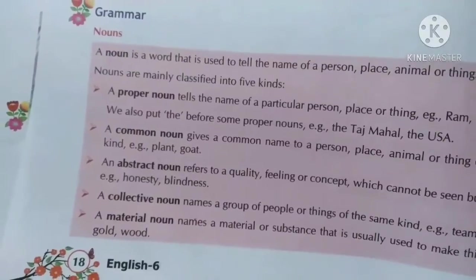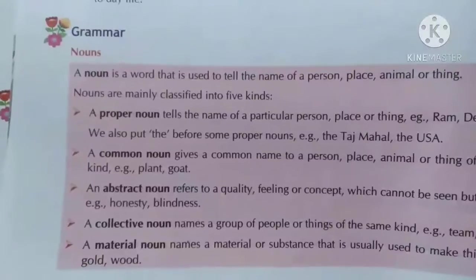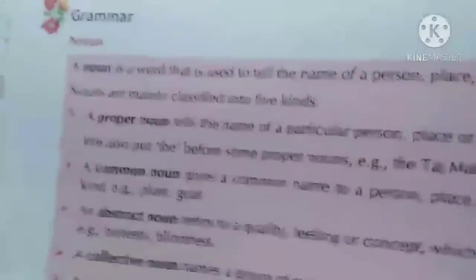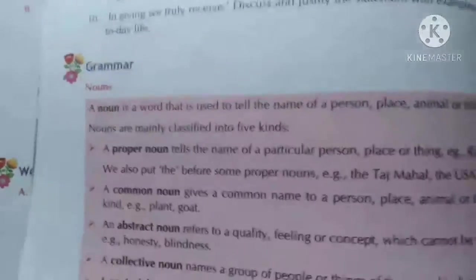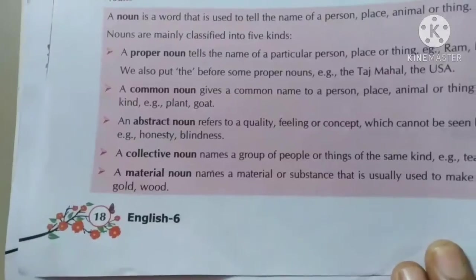After that we will come to the next chapter. Next chapter mein hum log ko kya hai? That is on page 18 — Nouns, types of the nouns. A noun is a word that is used to tell the name of the person, place, animal or thing. Then we have the types of the noun: proper noun, common noun, abstract noun, collective noun, and material noun.